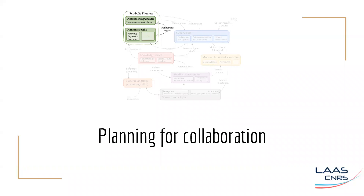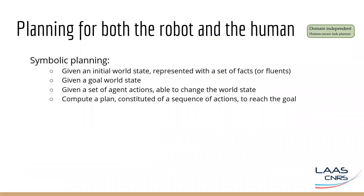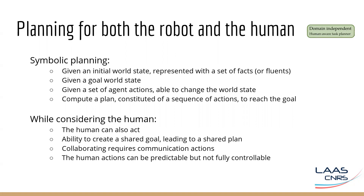Now we have seen the motion planning part. We will now see symbolic planning. In symbolic planning, we have the world state represented with a set of facts. Given an initial world state, a goal world state, and a set of actions able to change this world state, symbolic planning aims at computing a plan constituted of a sequence of actions to reach the specified goal. However, if we consider the human, the human can also act — so we have to consider them during the planning process. Moreover, both the robot and the human can have the ability to create a shared goal leading to shared plans, while accounting for both agents' actions.